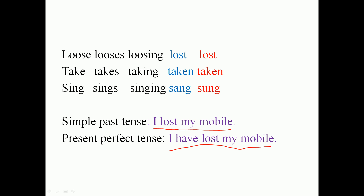If I say 'I lost my mobile,' maybe I lost it on Monday but found it on Tuesday. So just saying 'I lost my mobile' doesn't mean it is still true today — it means it was true in the past. But if you say 'I have lost my mobile,' it means what happened in the past is still true now, and my mobile is still lost. When you say 'I have lost it,' you lost it at some time in the past — we don't know exactly when, and it doesn't matter — because what matters is the result: I don't have my mobile right now.